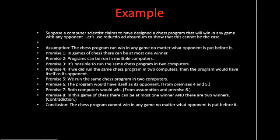Premise eight — here's the contradiction. In this game of chess, there can be at most one winner, as we saw in premise one, which means there cannot be two winners. And yet there are two winners from premise seven. Since we came upon a contradiction, we go back to the assumption and negate it, because the assumption itself led us to the contradiction. Our conclusion is that the chess program cannot win in any game, no matter what opponent is put before it, because in games when it has itself as its opponent, it cannot win.